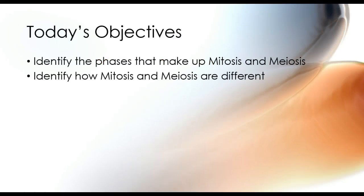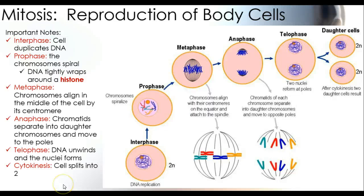Welcome back everybody. Today's objectives are to identify the phases that make up mitosis and meiosis, and to identify how mitosis and meiosis are different. The first process that we're going to go over is mitosis, which is the reproduction of body cells. We're going to talk about several different phases from start to finish.